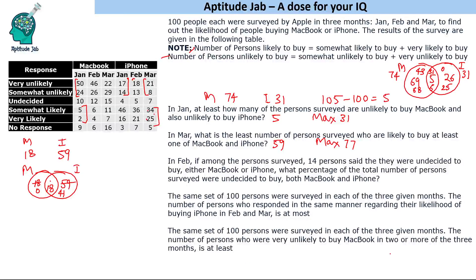In February, among persons surveyed, 14 percent said they were undecided to buy either MacBook or iPhone. What percentage were undecided to buy both? In February, undecided to buy MacBook is 12 and undecided to buy iPhone is 5, giving a total of 17. Since only 14 people responded as undecided overall, there are 3 extra — meaning 3 people are common. So 3 percent were undecided to buy both.